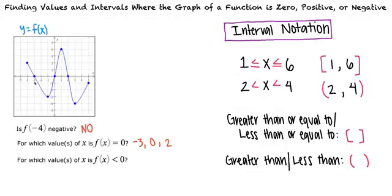Let's apply this notation to our problem. So the graph is below the x-axis when x is between negative 3 and 0 and when x is between 2 and 5. So we put those in brackets, right?